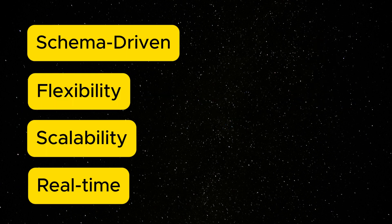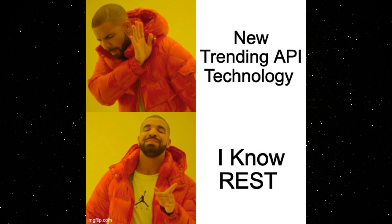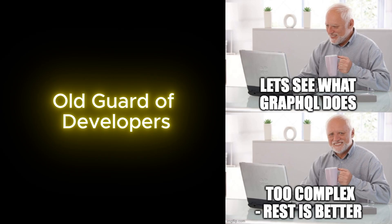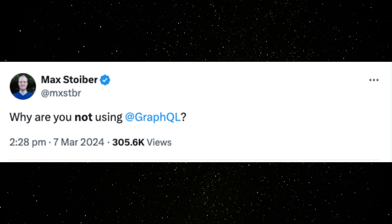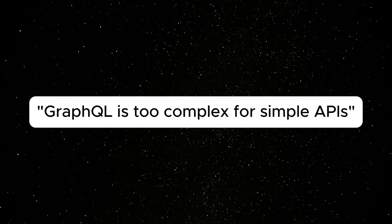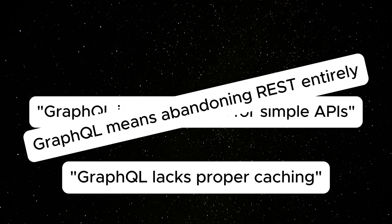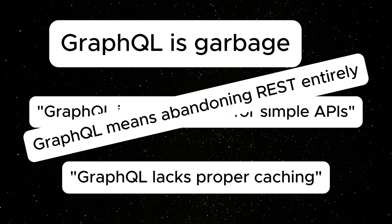Despite all its capabilities, GraphQL has experienced slower adoption over the past few years, attributed to various reasons and common misconceptions. The old guard of developers who've been working with REST APIs since the dawn of JSON would say, why fix what isn't broken? In March, Max Doiber, a well-known developer, stirred up a lively conversation on Twitter asking simply: why aren't you using GraphQL? Developers jumped in with responses like: it's way too complex for simple APIs; using GraphQL means saying goodbye to REST completely; GraphQL doesn't have proper caching like REST does; and simply, GraphQL is garbage.